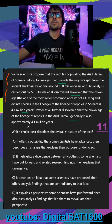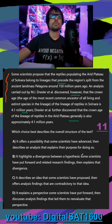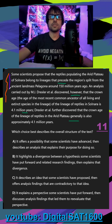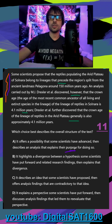So they want to know which describes the overall structure of the text. In A, it offers a possibility that some scientists have advanced — that's our intro — then it describes an analysis that explains their purpose for doing so. They do not elaborate on why they're doing this, so we can definitely get rid of A.